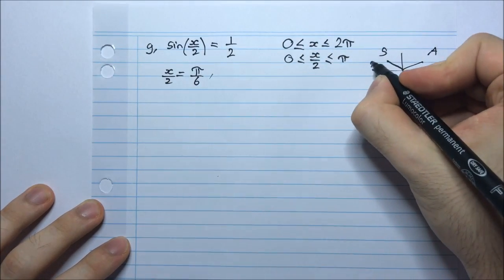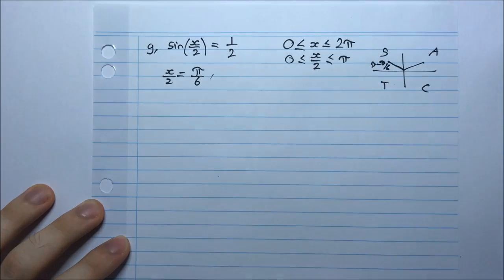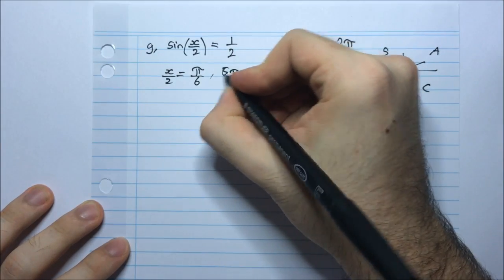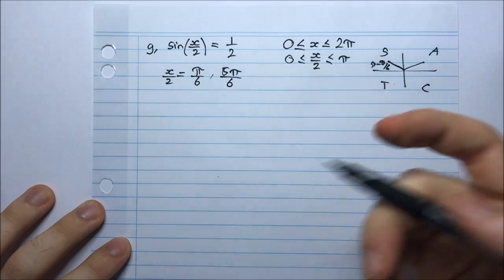And that is within our domain here for x/2. This is within 0 and π. So I do have to consider the second quadrant, and the angle would be π - π/6. That's going to be 5π/6.